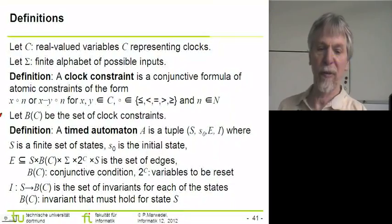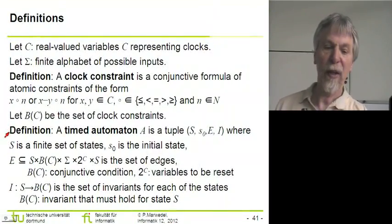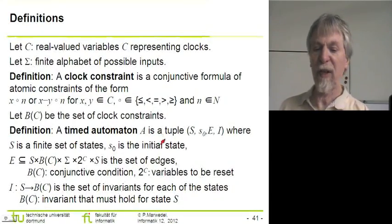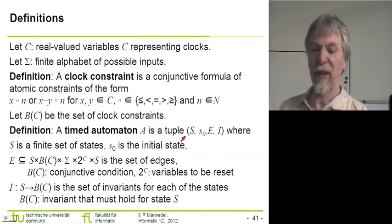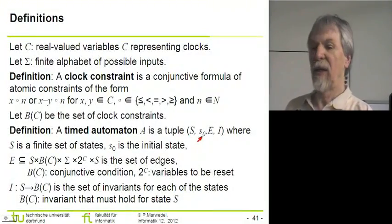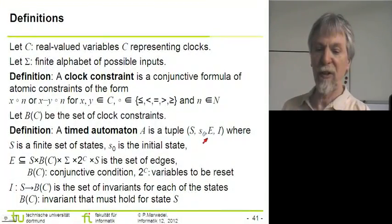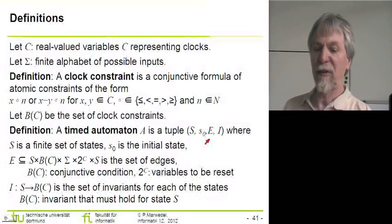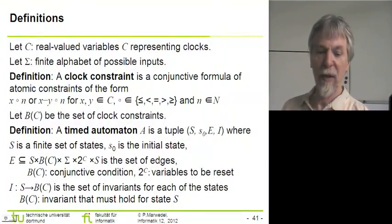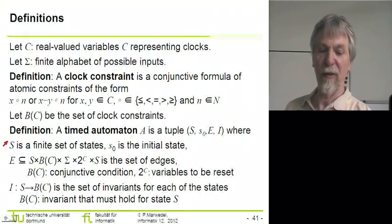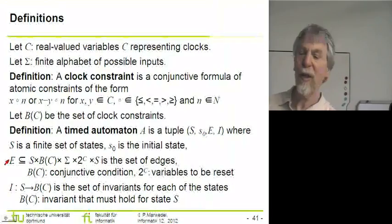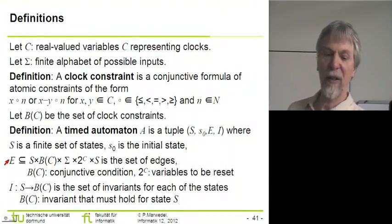We can formally define a timed automaton as a tuple comprising S, the set of states; S0, the initial state; E, the set of edges; and I, the set of invariants. So S is the finite set of states, S0 is the initial state. And maybe we need a couple of seconds to discuss the form of the edges.